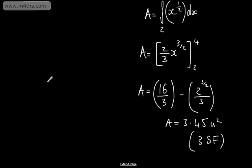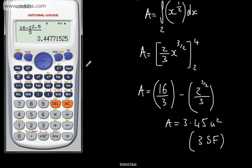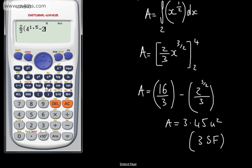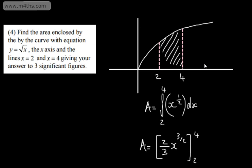If you were unsure about the substitution, you could write two thirds times 4 to the power of 1.5 minus 2 to the power of 1.5, and this will give the same answer. It's entirely your decision how you want to substitute this into a calculator — we get exactly the same either way. I like to show workings, especially if it's an exam question, as we would be expected to show that.